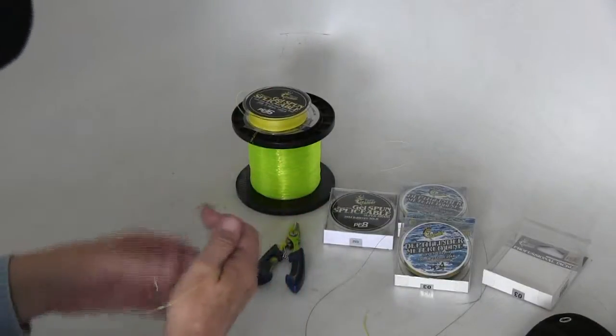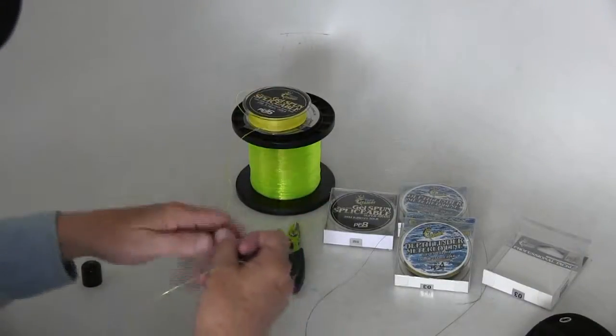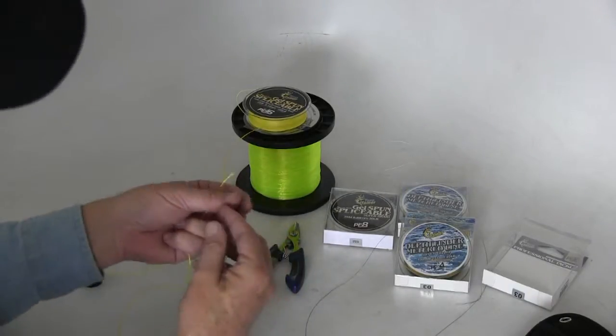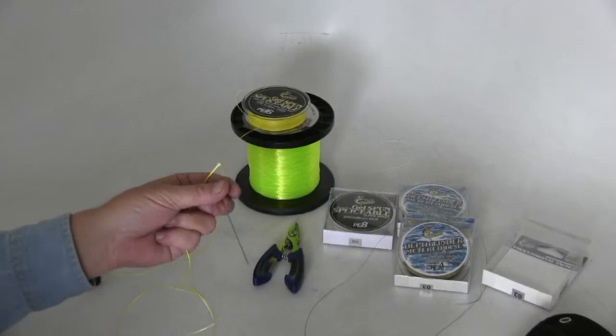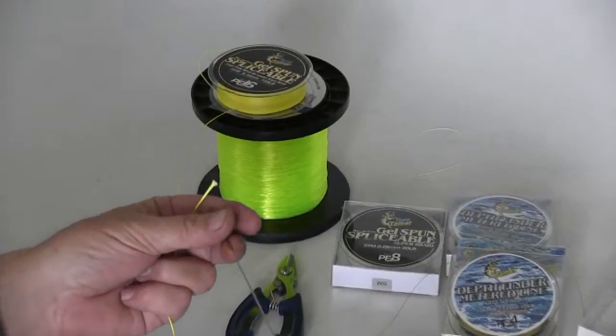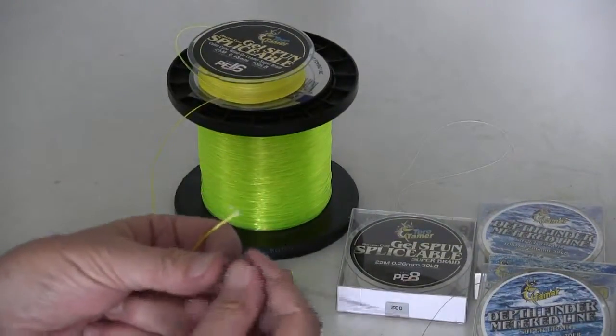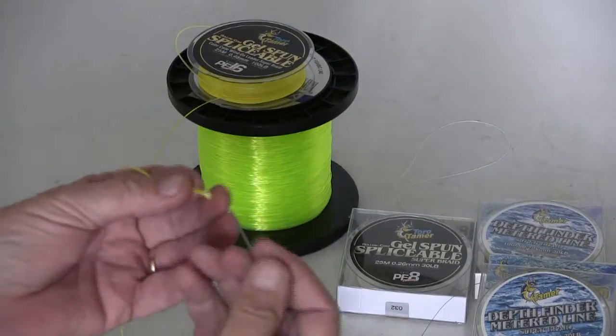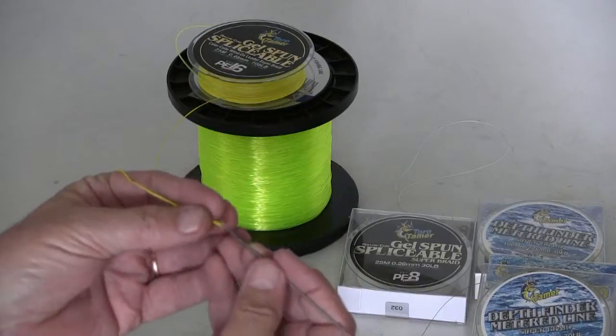Just for the purposes of contrast and being able to see what's going on here, I'll use the yellow of the high-vis colored hollow braid. The leader we're using is either 80 or 100 pound, and the test on that 16 strand braid is also 100 pound.